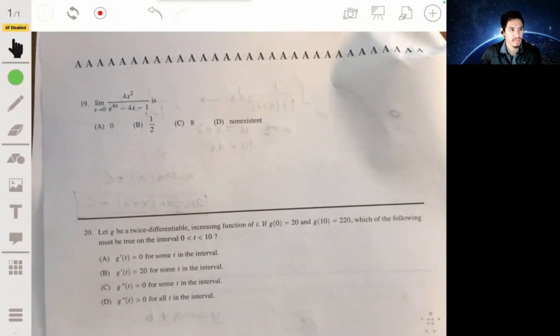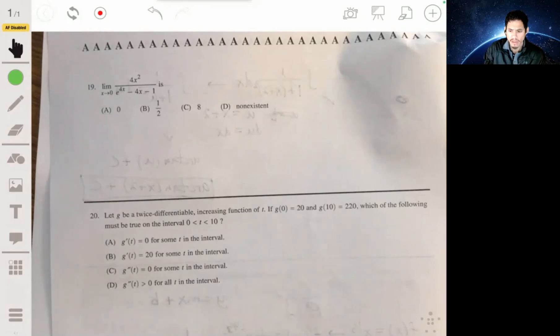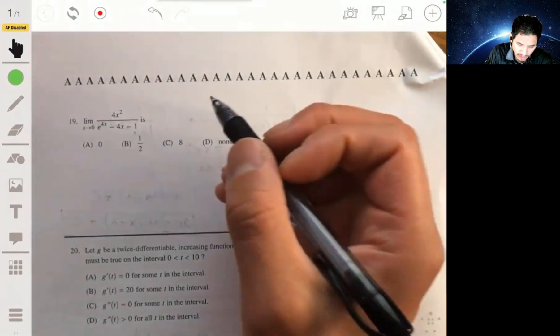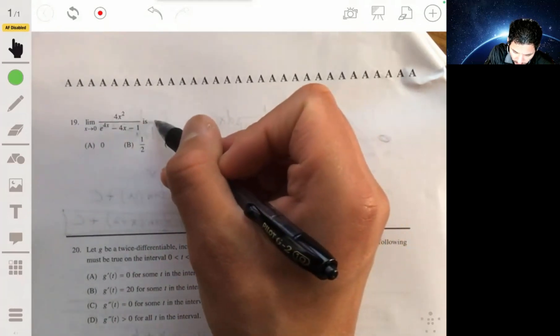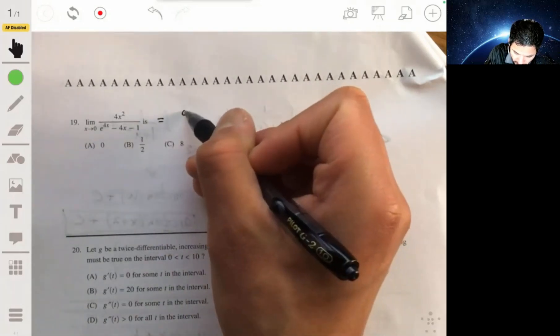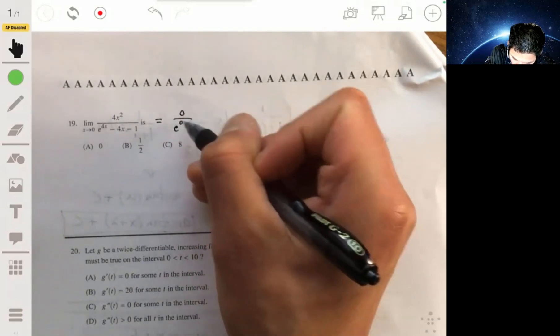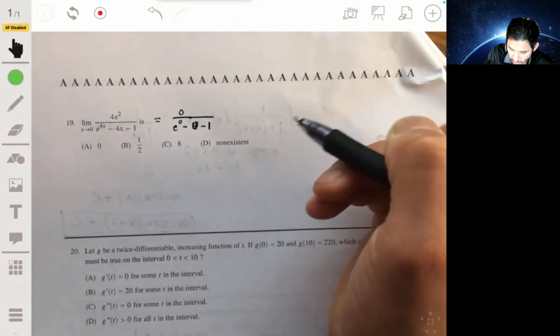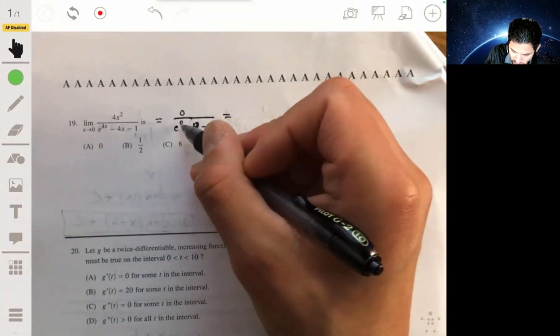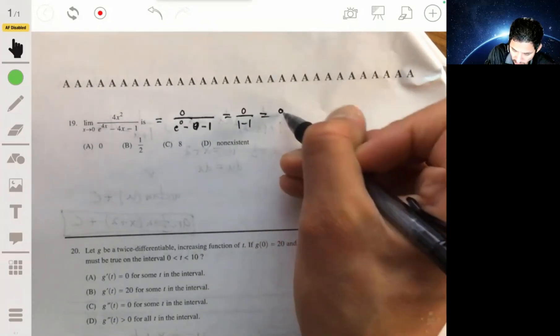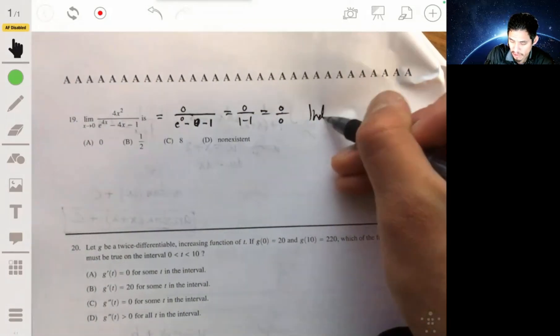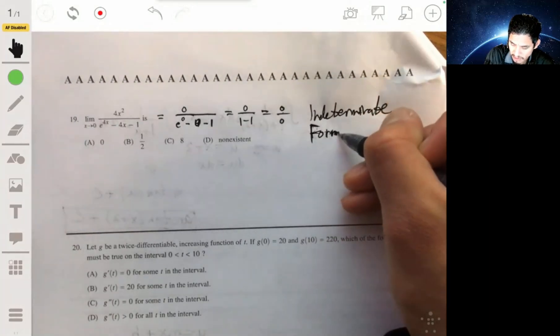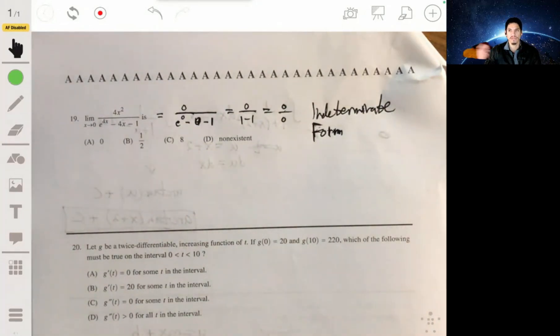Number 19. We have the limit as x goes to 0 of 4x squared over e to the 4x minus 4x minus 1. Now, you can plug in 0 here, but if you plug in 0, you would get 4 times 0 over e to the 0 minus 4 times 0 minus 1. So what would happen is that you remember e to the 0 is 1. So what you end up getting is 0 over 0. Now, if you remember, at least in my textbook, we learn about L'Hôpital's rule.